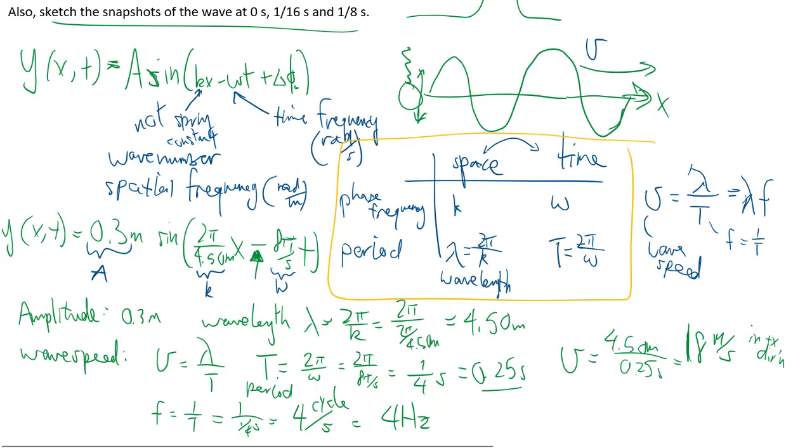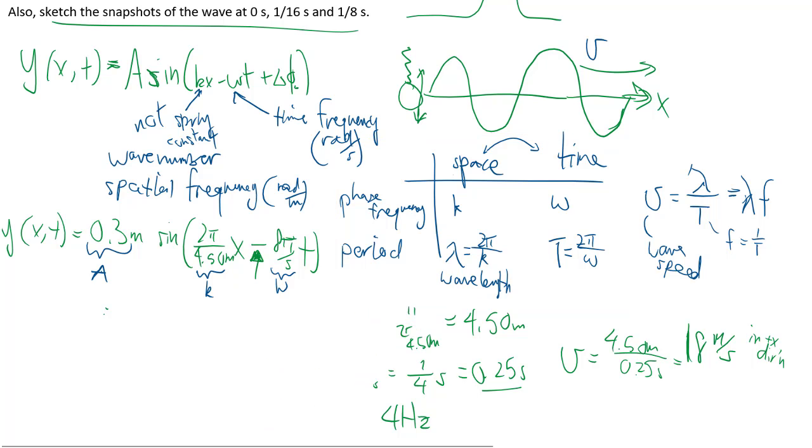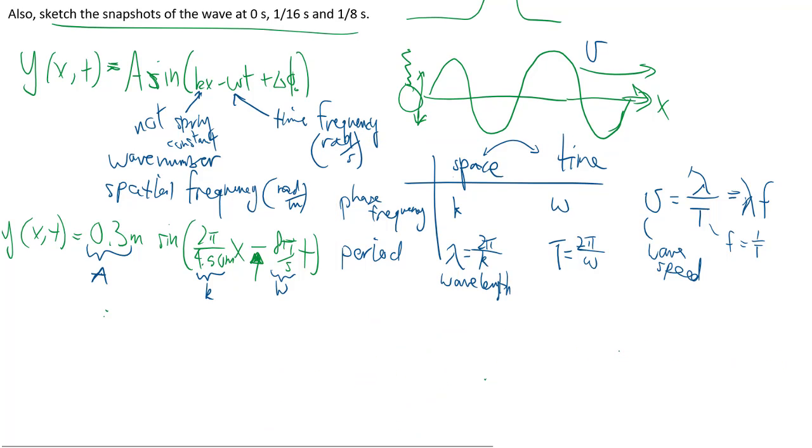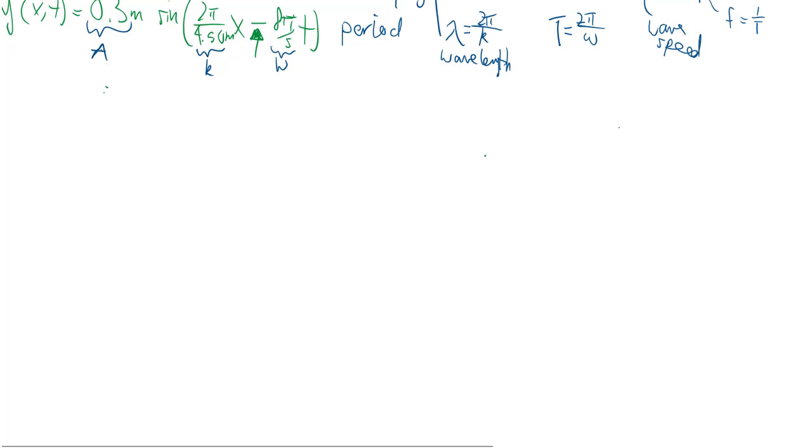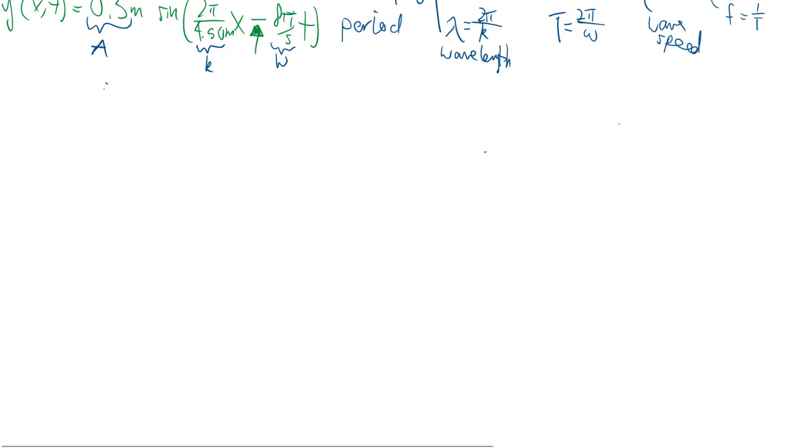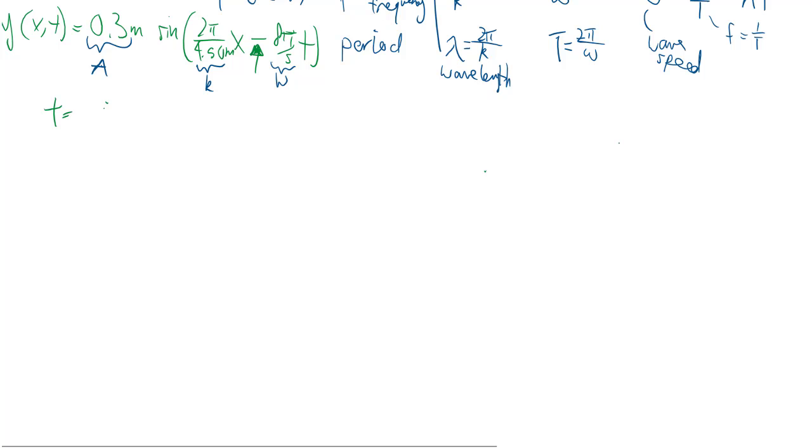So now let's clean up a bit and we can look at sketching some of these things we call snapshots. What snapshot refers to, it's like we're taking a picture of the wave, because as time goes on the wave keeps on moving. So at a particular time, if we take a picture of the wave, how does it look like? So the first snapshot we want time to be zero seconds, so we're fixing the time.